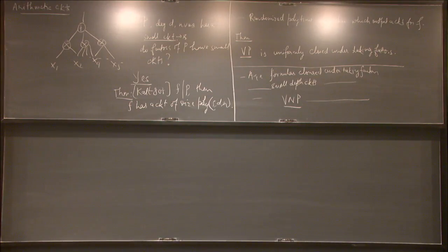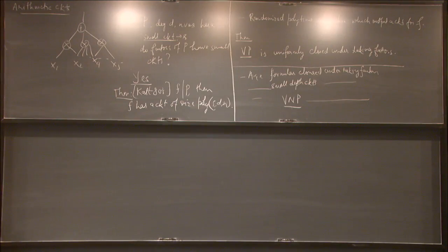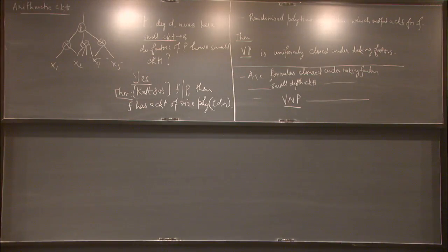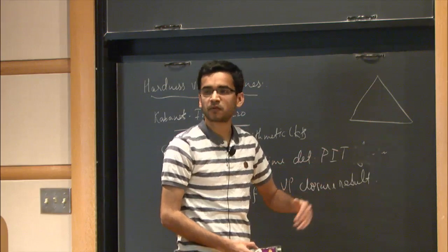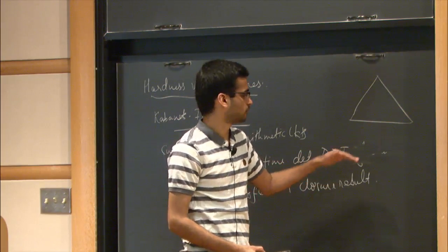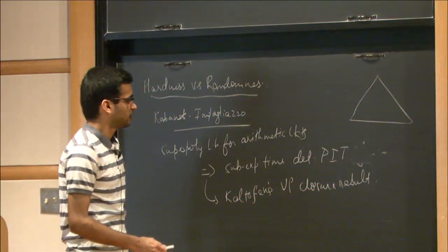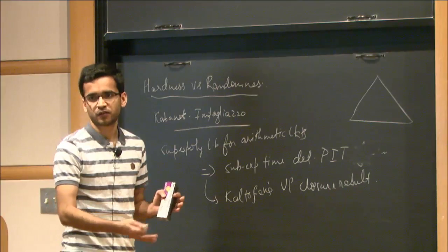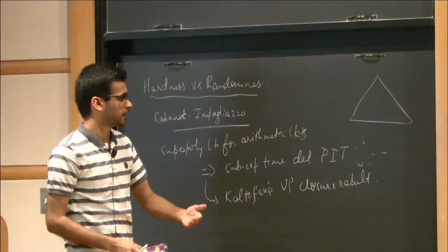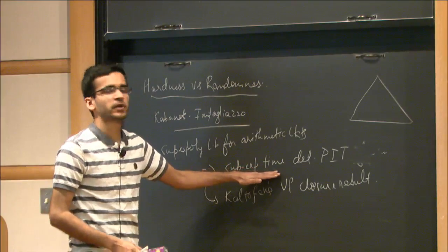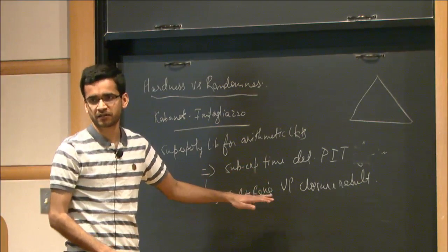The problem is: your input is an arithmetic circuit and you have to decide if it computes the identically zero polynomial or not. It's easy to do in randomized polynomial time — you just pick a random point from a large enough grid, test if it's zero, and output accordingly. The question is to de-randomize this: come up with a deterministic algorithm. Trivially you can do brute force over a large enough grid, but that running time is exponential. Anything better than that is of interest.